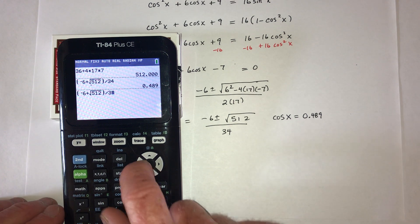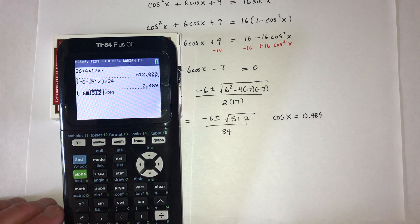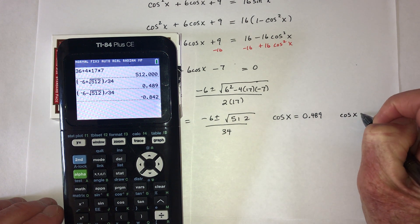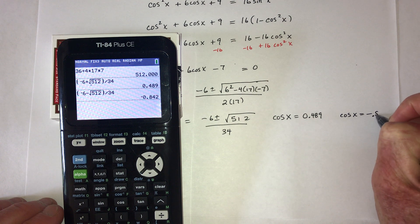Now do the same thing when the quadratic formula has subtract right here. And it's cosine of x equals negative 0.842.